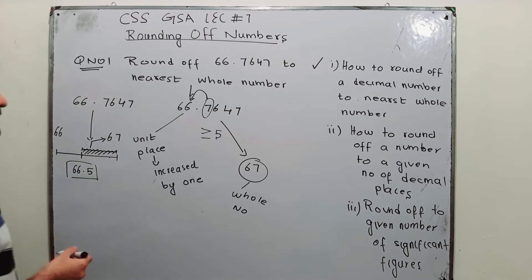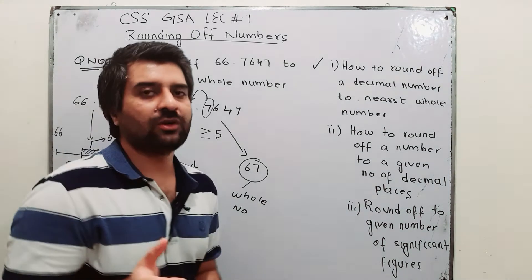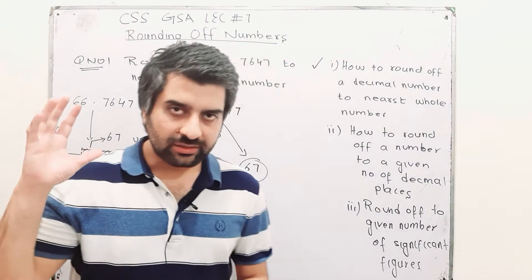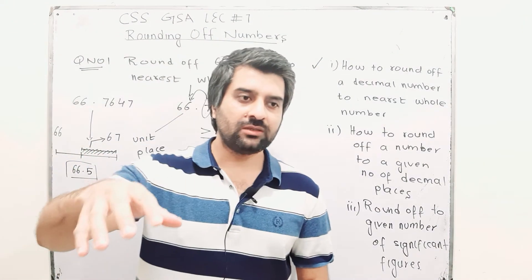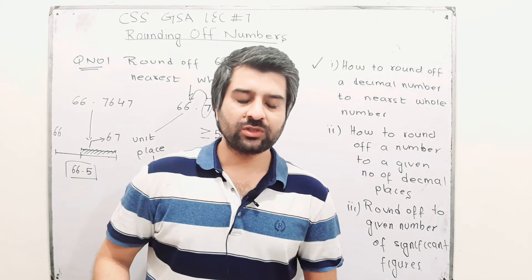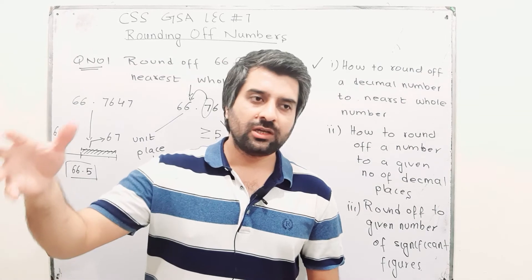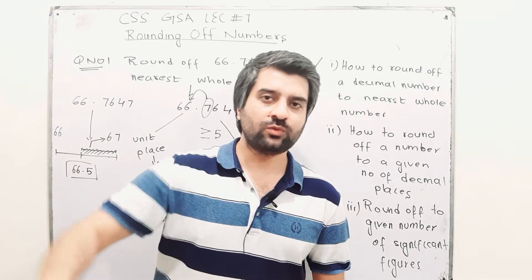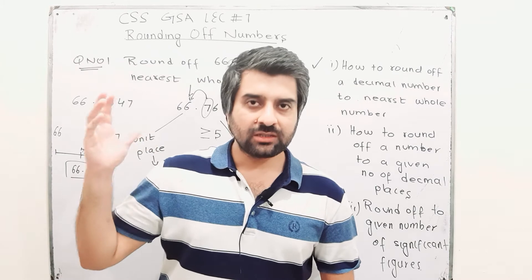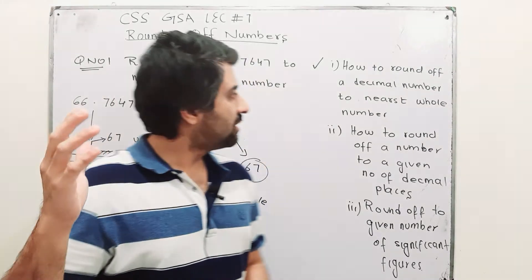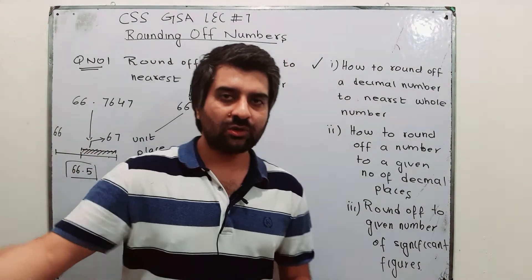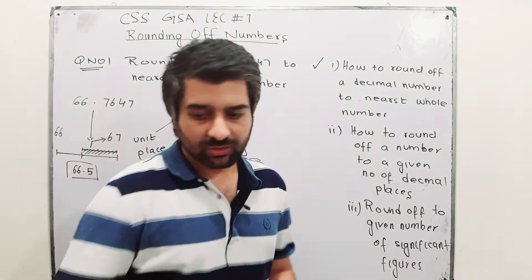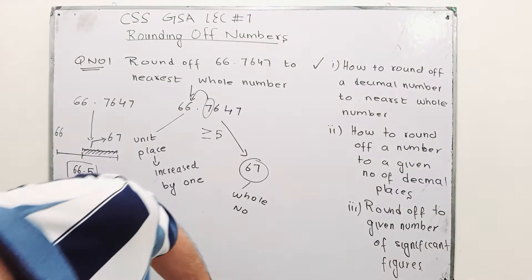This is one type of question asked in rounding off. You may need to round off answers in different questions to whole numbers as demanded in the question. The next part is rounding of a number to a given number of decimal places. Let me explain what this is about.